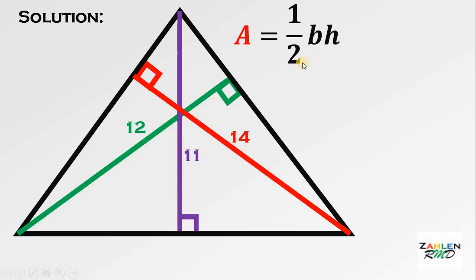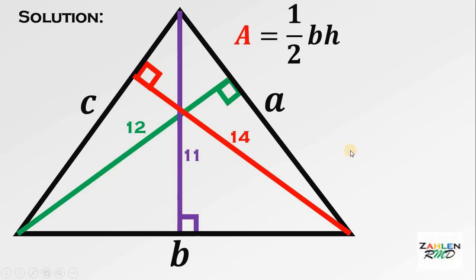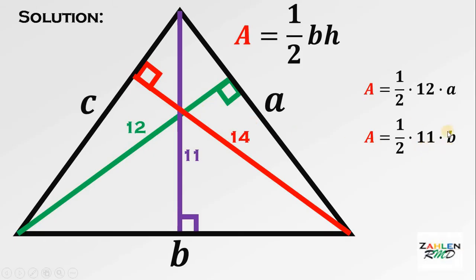We will use the concept of the area of a triangle: one-half times base times height. Let's name the sides of the triangle — side A, side B, and side C. Since we are given three altitudes, we can represent the area of this triangle in three different ways. The first is one-half times 12 times A, with altitude 12 and base A. Next, one-half times 11 times B, with base B and height 11 units. And lastly, one-half times 14 times C, with base C and altitude 14.